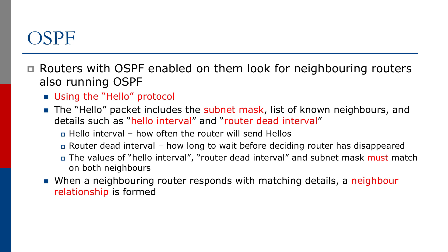Routers with OSPF enabled look for neighboring routers also running OSPF. To do this, they use what's known as the hello protocol. The hello packet includes the subnet mask, a list of known neighbors, and details such as the hello interval and the router dead interval. The hello interval is how often the router sends hellos, and the router dead interval is how long to wait before deciding a router has disappeared. The values of hello interval, router dead interval, and subnet mask must match on both neighbors before an adjacency is established.